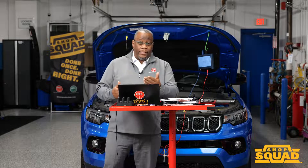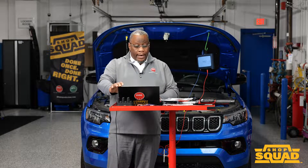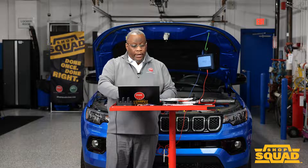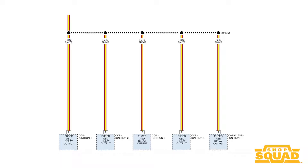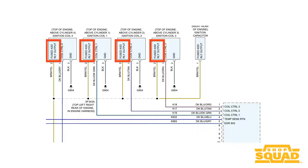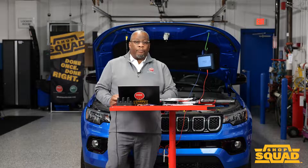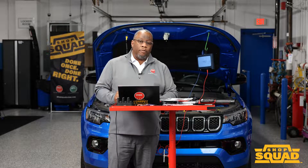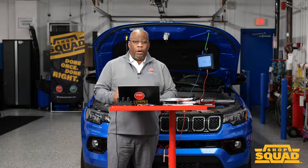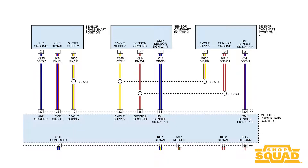Looking at a wiring diagram, when the ASD relay is switched on by the PCM it sends output voltage on a brown and yellow wire and feeds the coils and other components. The key thing is ASD relay control pin 27 — what makes the computer ground that to activate the system? It's looking at cam and crank synchronization, so it knows the car is being cranked and wants to start. If it doesn't see either one of those, the computer would not activate the relay.